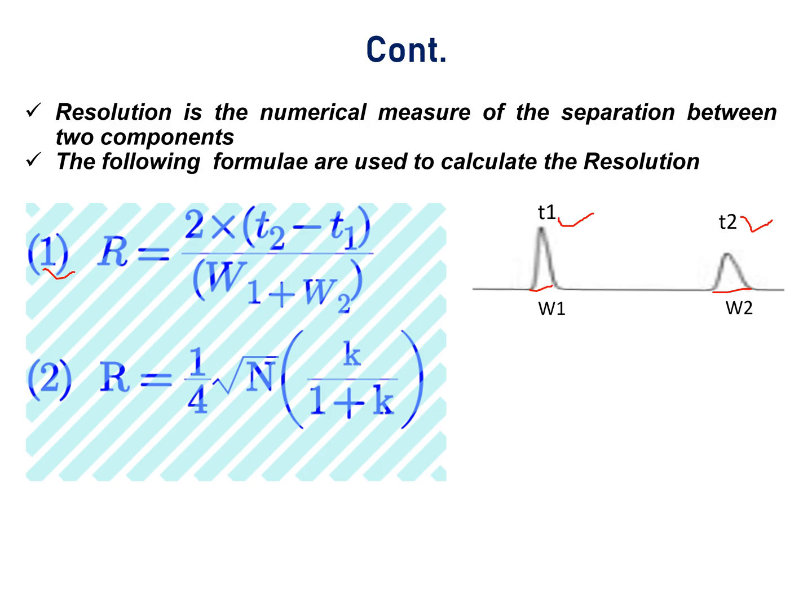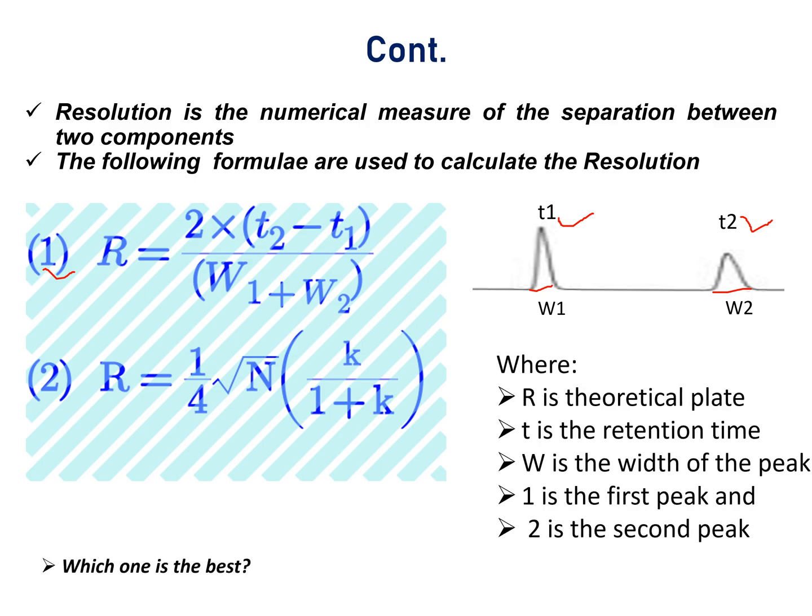The second formula is R = (1/4) × √N × (α − 1)/α × K/(1 + K), where N is the column efficiency, K is the capacity factor, which tells about the location of the peak of interest relative to the unretained peak. The question is: which formula is the best?